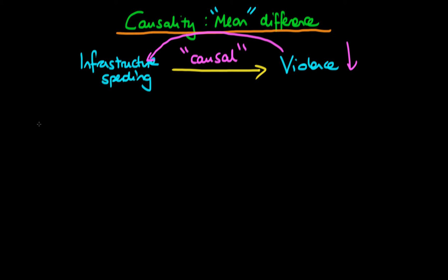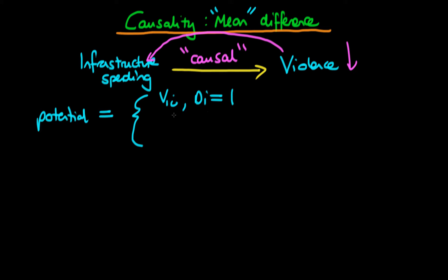In the last video we defined what we called the potential level of violence in a given district. We said that any district has two different potential levels regardless of the state they're actually in. I'll use the word 'district' from now on. Each district can be in one of two states: it can be in state v1i if the level of infrastructure spending is above some threshold, or it can be equal to v0i if there is no infrastructure spending or it's below some threshold. These are just the potential levels of violence, regardless of whether in fact there was infrastructure spending or not.